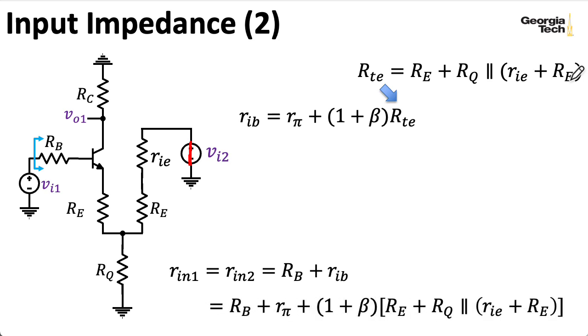And again, if we let RQ go to infinity, then these REs combine giving me two RE, and that matches the expression for the input impedance I found in the previous lecture.